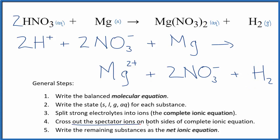So now we can cross out spectator ions. They're on both sides of the complete ionic equation. So in the reactants here, there are two nitrate ions. We also, in the products, have two nitrate ions. So these are spectator ions and we can cross those out. Those are the only things that are the same on both sides.